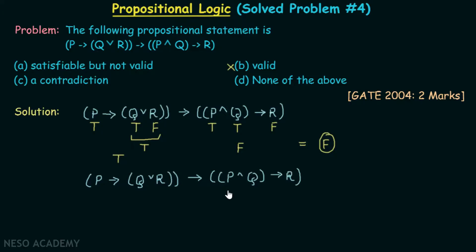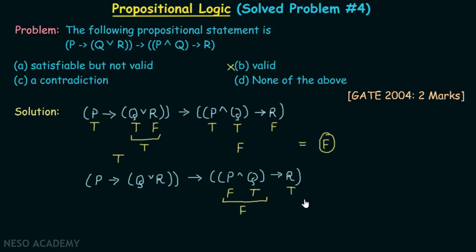Let's take p false. When p is false, it doesn't matter what the truth value of q is — this part of the compound proposition becomes false. Let's take q true. Then that part becomes false, and we know that false implies anything is always true. So let's take r true, and the whole compound proposition becomes true.